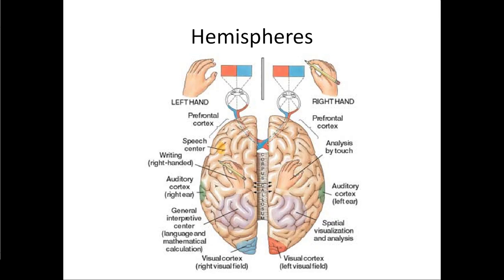Along with speech, the left hemisphere handles general interpretation of language and mathematical calculations, whereas the right side handles analysis by touch and spatial visualization. There's been this 'creative versus logical' framing, but that just doesn't map out the way people want it to. You do have a dominant hemisphere — if you're right-handed, it's almost certainly your left hemisphere. If you're left-handed, it can actually go both ways, and we don't quite understand what's going on there.